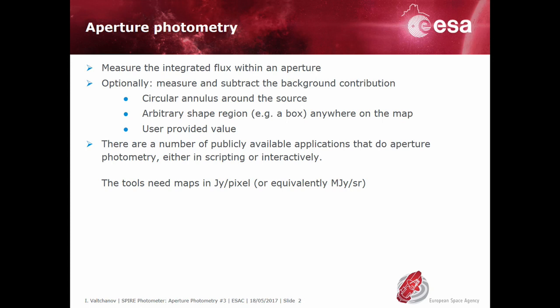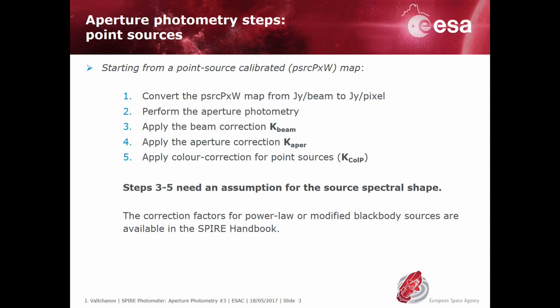Aperture photometry on astronomical images is a common task; there are a number of publicly available software applications to perform it. Most of them expect the input images to be in flux units per pixel or per steradian. As an example, we are going to discuss the steps to perform in order to extract aperture photometry for a point source. We will start from the standard pipeline-processed SPIRE point source calibrated maps, which are in units of Jansky per beam, so the first step is to convert them to Jansky per pixel. Once the images have the proper units we can proceed to measure the integrated flux density within a given aperture.